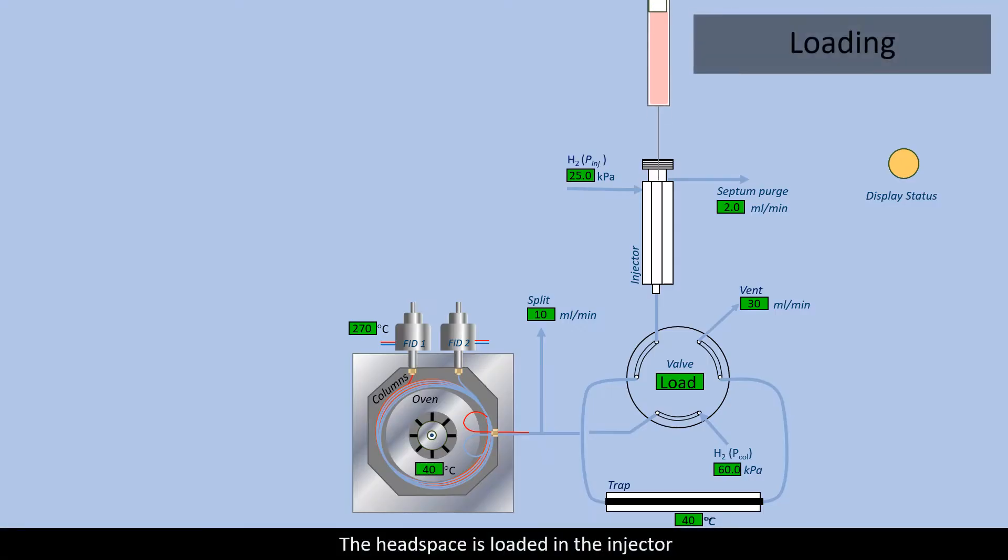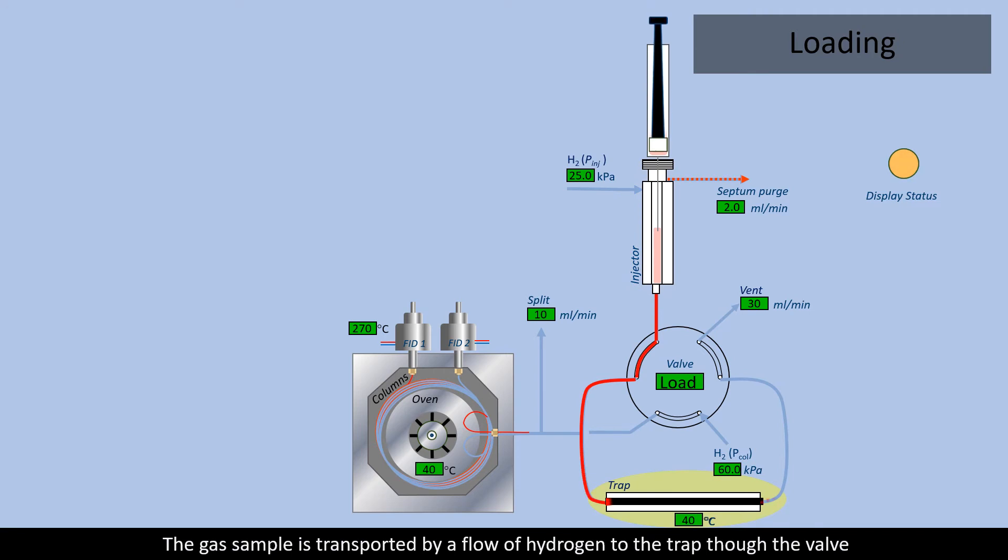The headspace is loaded in the injector. The gas sample is transported by a flow of hydrogen to the trap through the valve. The organic molecules are absorbed by the cold trap and the air is evacuated to the vent.